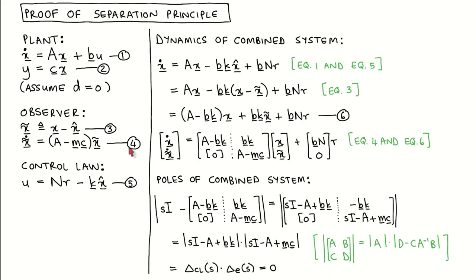The control law for the combined system is given in equation five, where the input is calculated as the feed forward gain n times the reference input r, minus the state feedback gain k times the estimated states x̂. We now combine equations one to five into a state variable description of the full system.